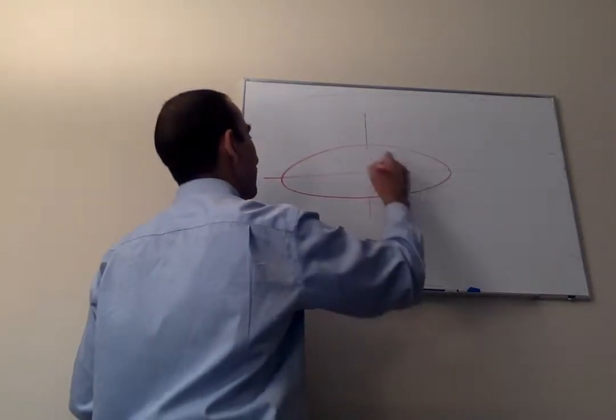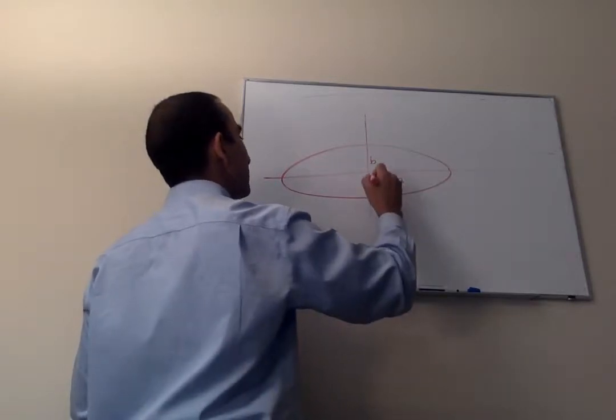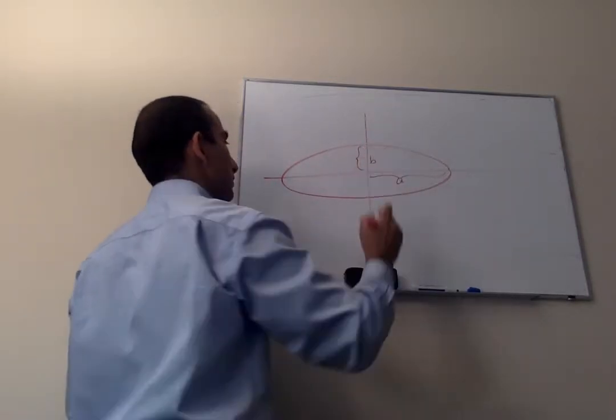Let's call this A and this B, where A is this distance and B is this distance.